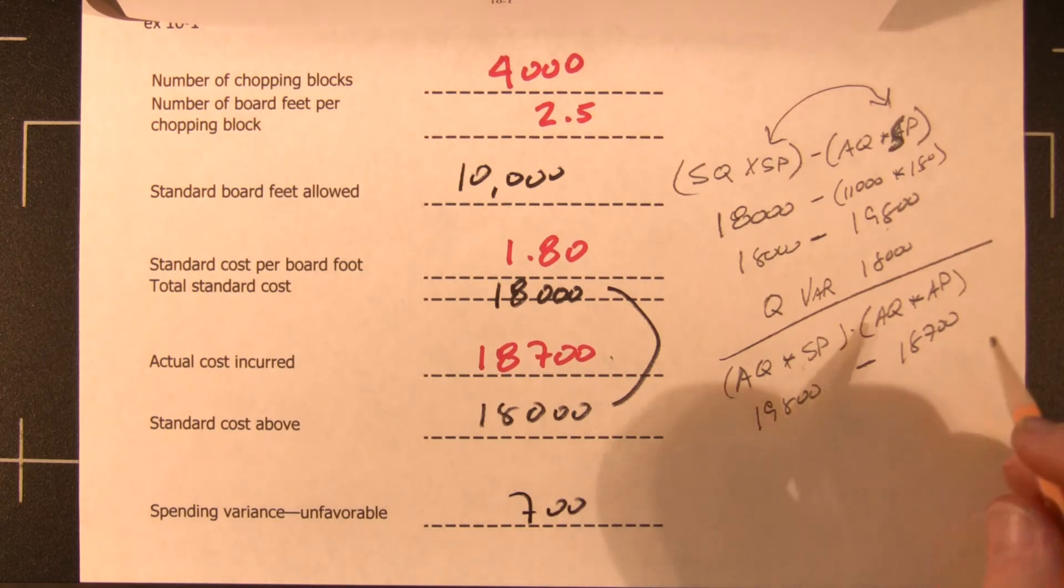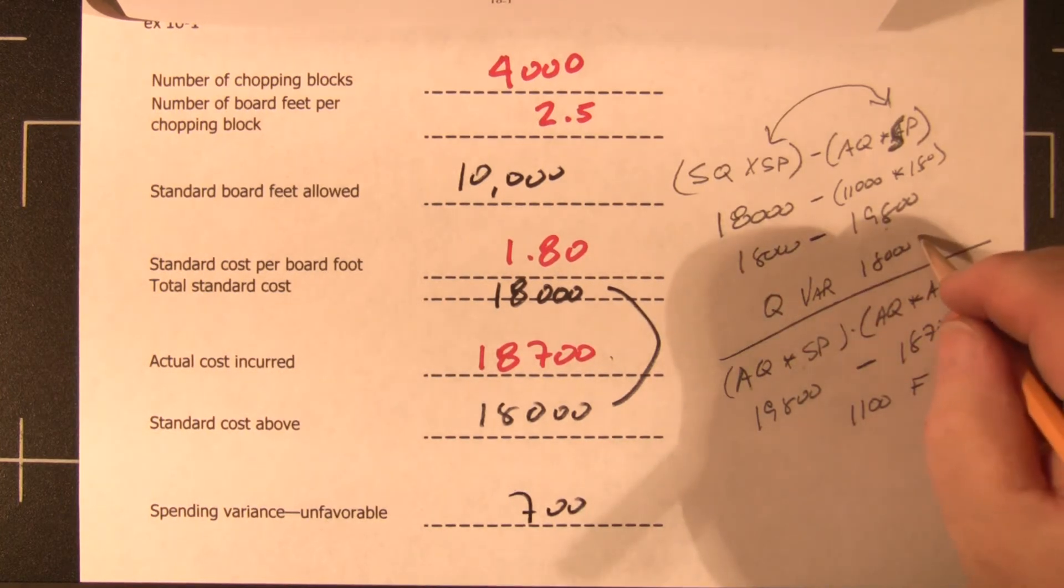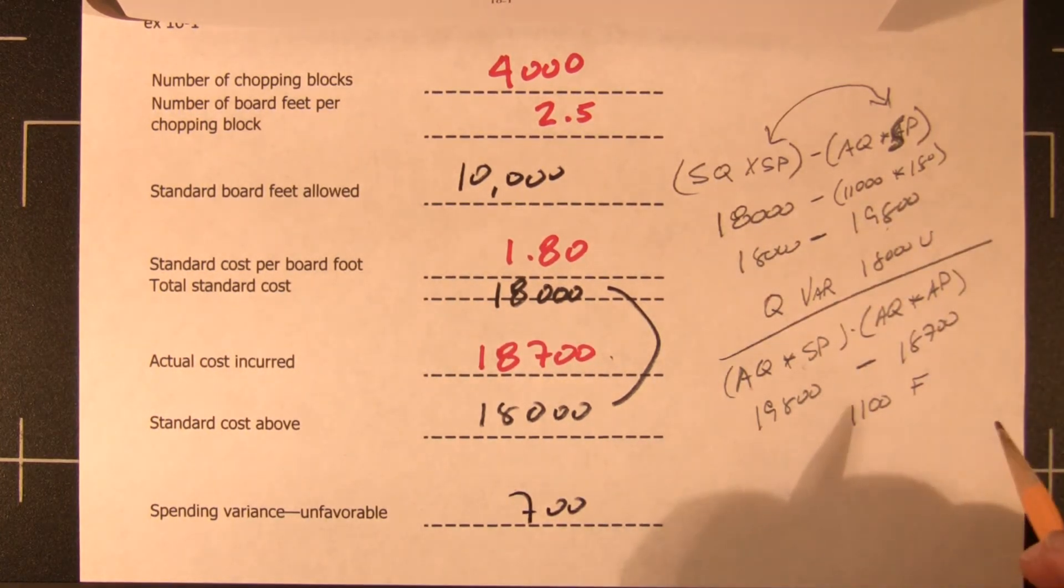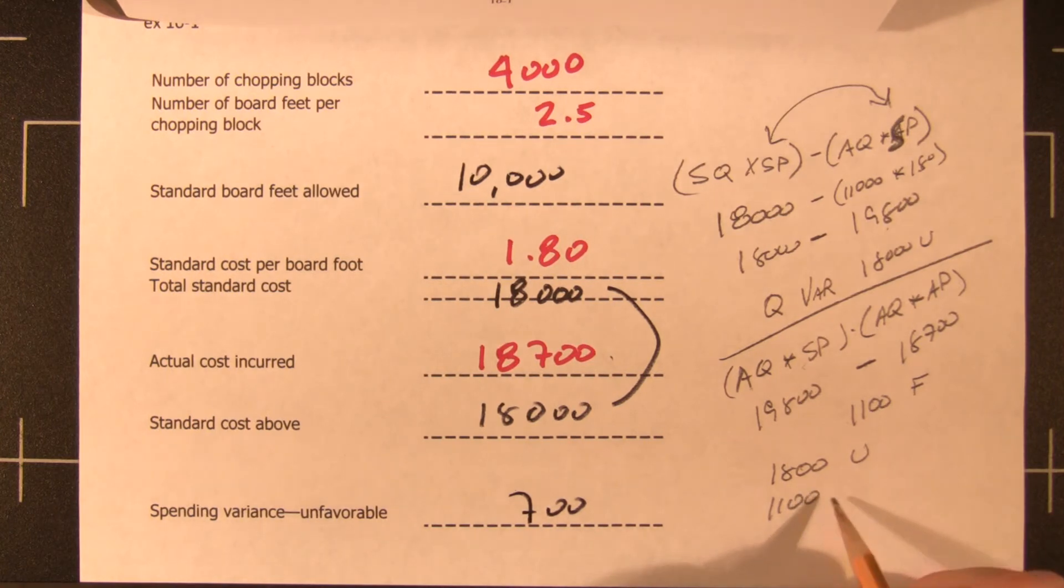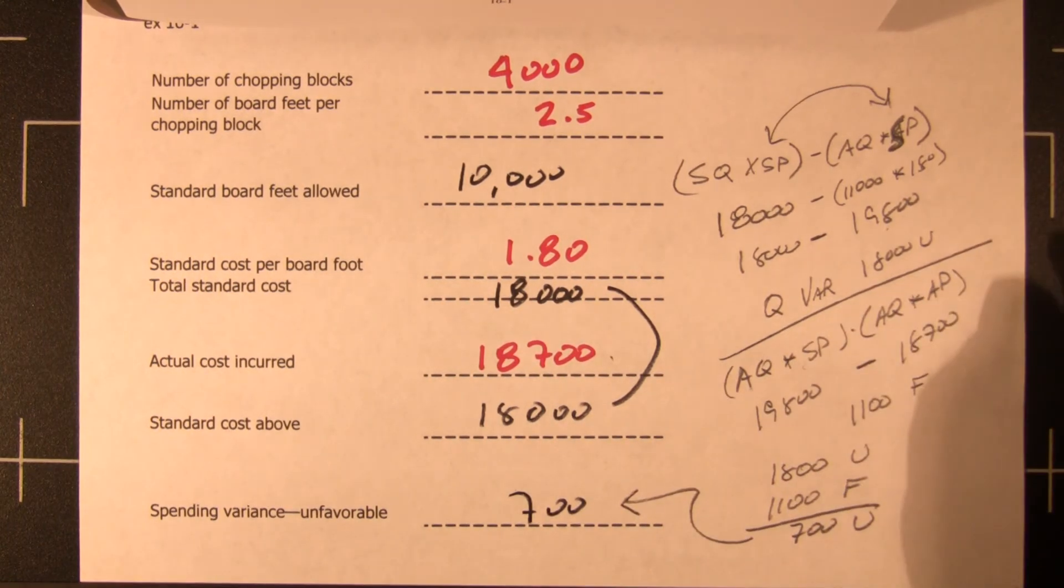That gives us a total of $1,100 favorable variance. Actually, that's an unfavorable variance. And when we net them, we come up with $700 unfavorable spending variance.